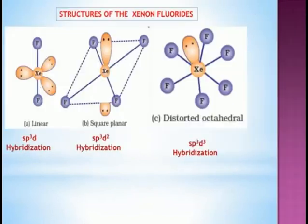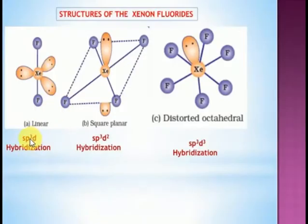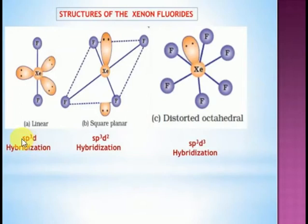The structure of xenon compounds: xenon difluoride has two fluorine atoms attached to xenon. Xenon's electronic configuration is 5s² 5p⁶. When one electron jumps to the next orbital (5d), two bonds form. For hybridization: three lone pairs plus two bond pairs = five. So one s, three p, one d orbital — sp³d hybridization. Xenon difluoride has sp³d hybridization and is a linear molecule.